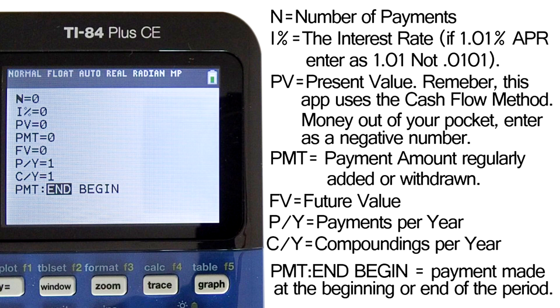I percent is the annual interest rate also known as APR. Do not convert this into a decimal format. If the annual interest rate is 1.01 percent then enter as 1.01.